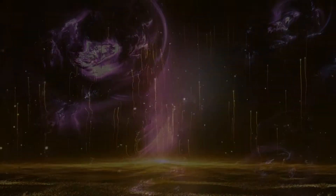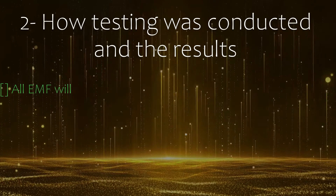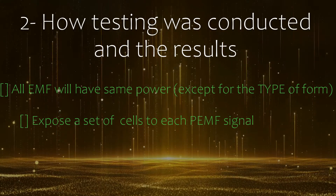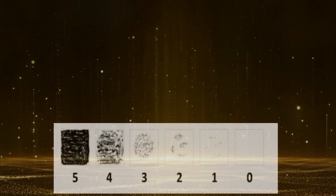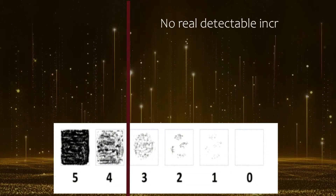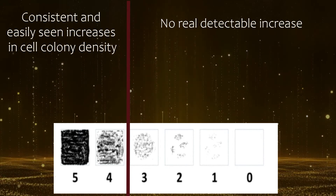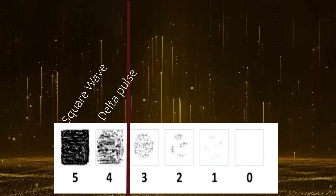The way it was tested was really simple. They made a hypothesis, and then they said: we're going to keep the PEMF waveform constant, expose some petri dishes that are going to grow muscle cells, keep everything the same, and see which one grows the best. This is a very good visual grading example. The results fell into two different categories: one where there was no detectable increase in muscle cell growth, and one where there was a consistent and easily seen increase in cell colony density.